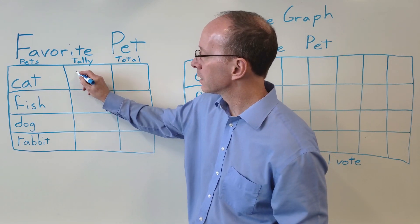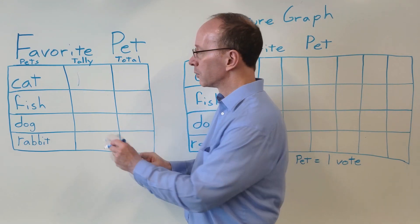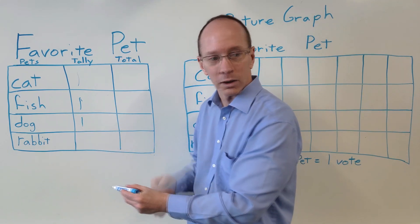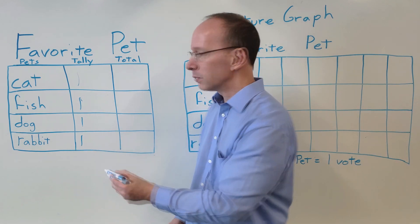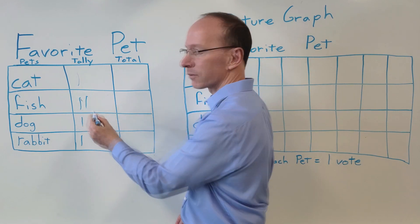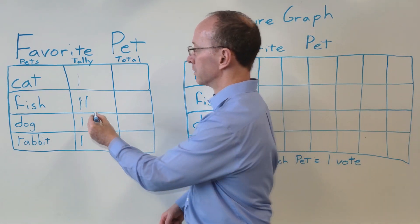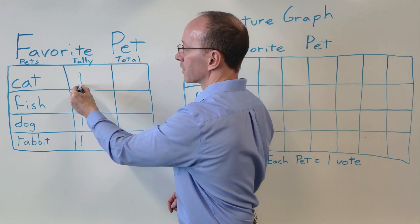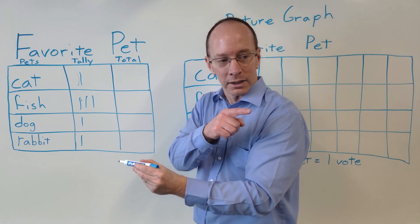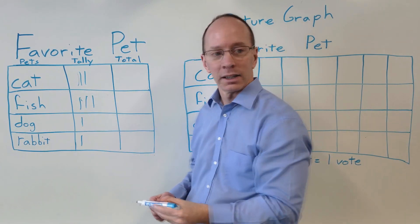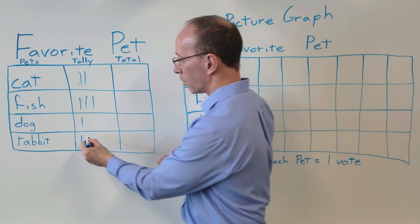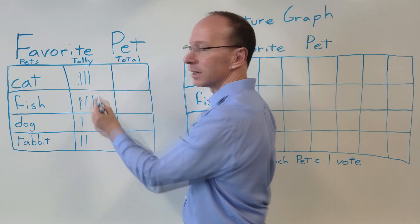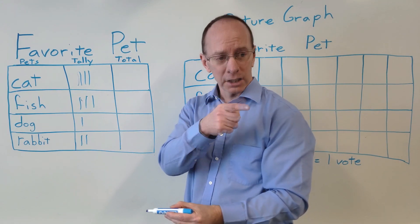Cat. We've got one for cat. Fish. Cat. We've got one for rabbit. Another one for fish. Another one on fish. Right over there we got one for cat. Another one for cat. One vote for rabbit. Another vote for cat. And another vote for cat.